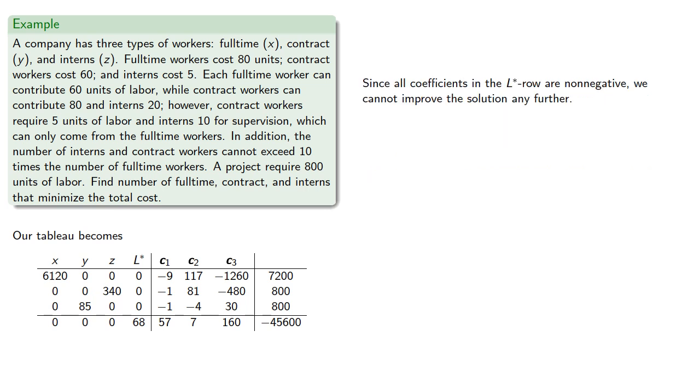And since all the coefficients of the L star row are non-negative, we can't improve this solution any further. Setting the free variables to zero, and solving for x, y, and z. And since we don't actually care about the slack variables, we find...